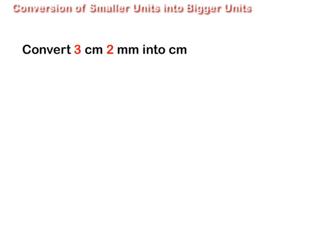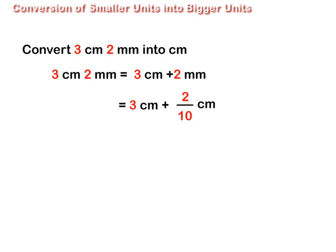To convert 3 cm 2 mm into cm, we first write it as 3 cm plus 2 mm. Then we divide 2 mm by 10 to get 0.2 cm. Then we add 3 cm and 0.2 cm. Thus, 3 cm 2 mm is equal to 3.2 cm.